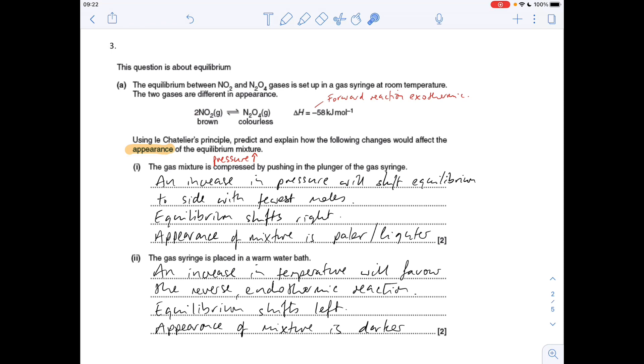The next part of the question, the syringe is placed in a warm water bath, so the temperature's increased. Well, a temperature increase always favours the endothermic reaction. That's going to be the reverse reaction, because we know the forward reaction is exothermic. So it's going to move to the left or backwards. It's going to get darker, more brown.